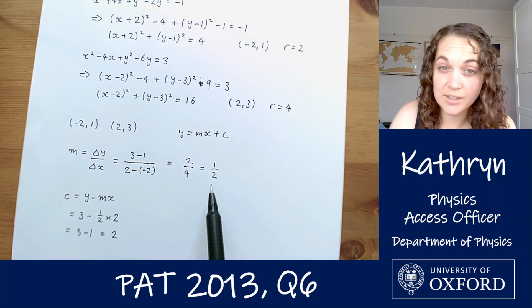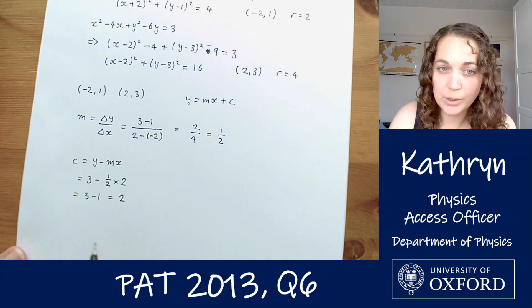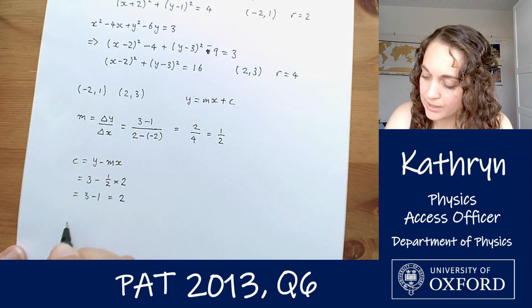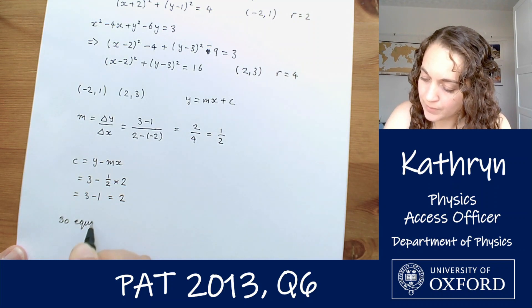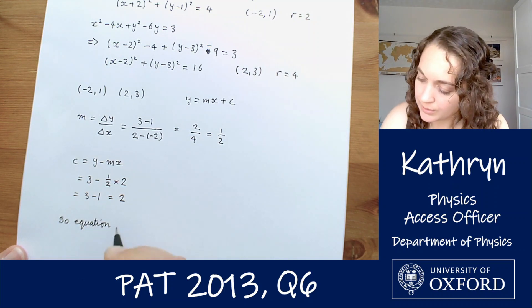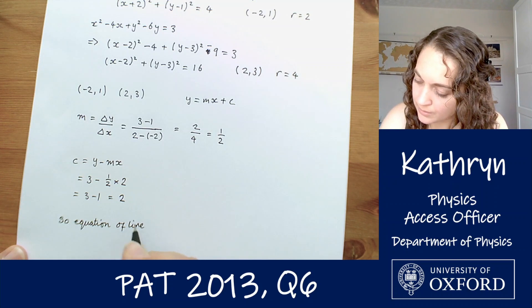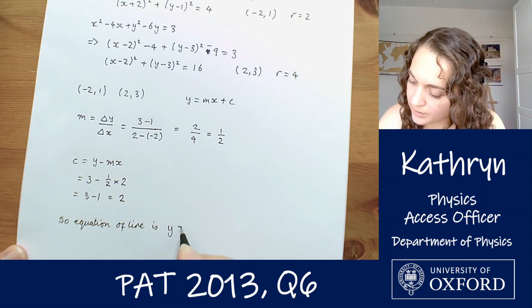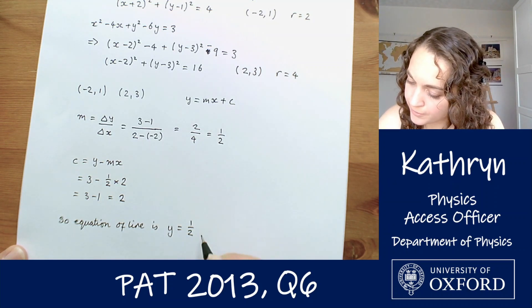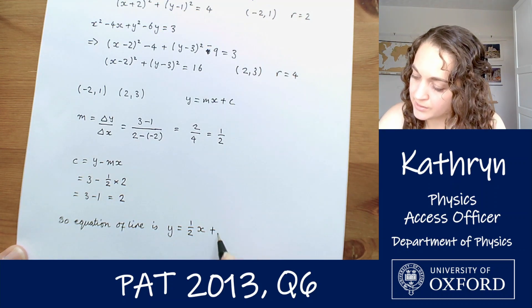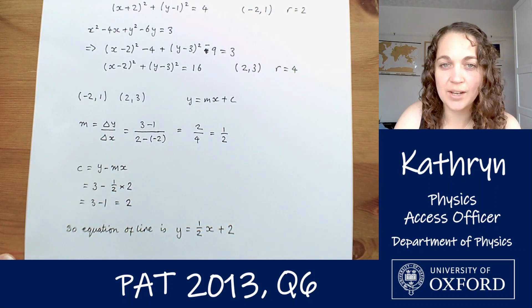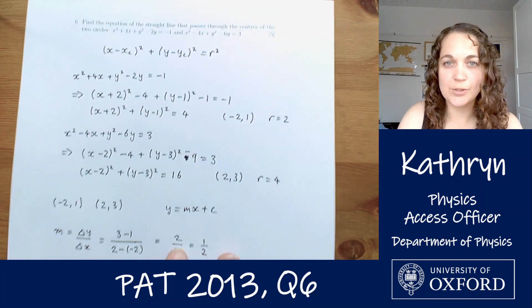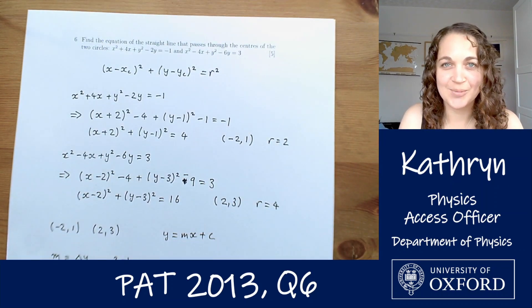So our gradient is a half, our y intercept is 2, which means that the equation of our line is y equals 1 half x plus 2. And there we go. That is the equation of our straight line through the centre of those two circles as the question asked.